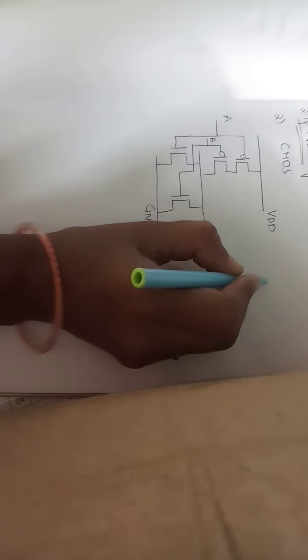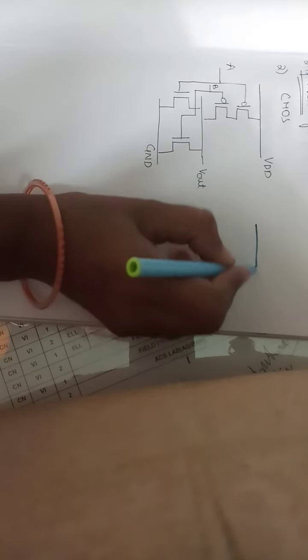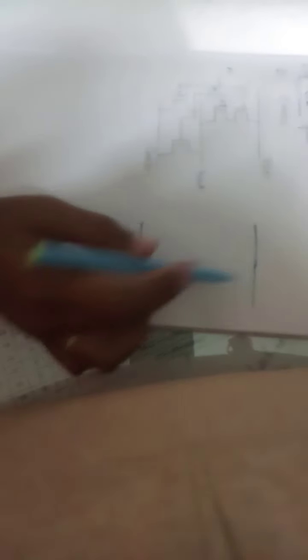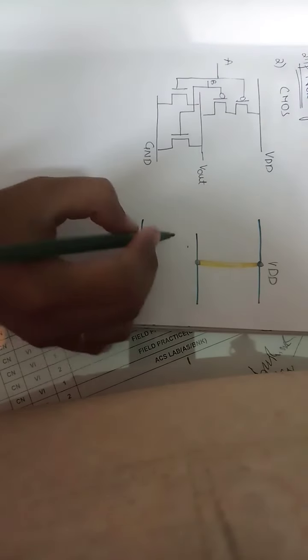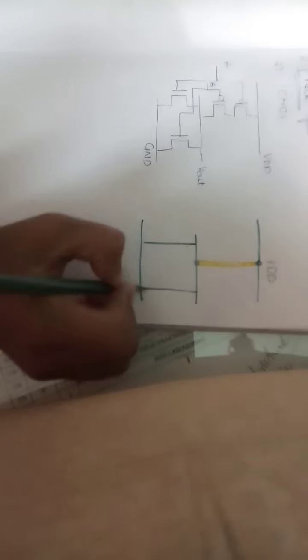Now let us start the stick diagram. Starting with metal — these two metals represent VDD and ground. To differentiate P and N, use another metal. The P-channel P-diffusion is in series connection, so represent it with a horizontal line. Here is the contact cut. For the N-diffusion, the two transistors are in parallel connection, so represent them in parallel with green color.